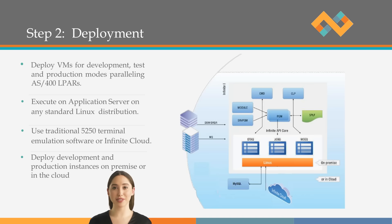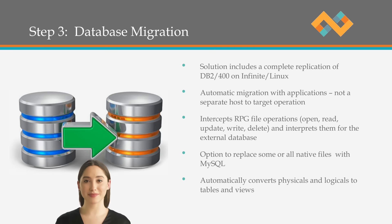Step two is deployment. IBM iLPARs become VMs or containers in Linux on Azure, AWS, or GCP. Typical VMs include dev, test, and production modes. Standard access to the cloud instances is via 5250 or our web-based GUI. Step three is database migration. As I mentioned earlier, Infinite has replicated DB2400, and in the first two steps the data from your AS400 will be migrated to Infinite iEye in the DB2400 format.